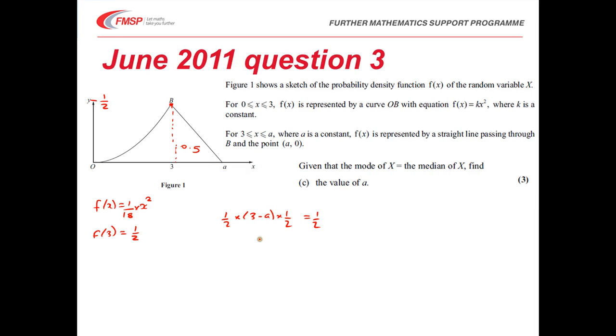So calculating this through, this tells me that 3 minus a, or a minus 3, sorry. Getting it the correct way around, a is bigger than 3. So a minus 3 must in fact equal 2. So a must be 5.